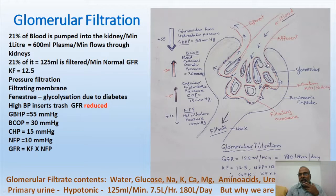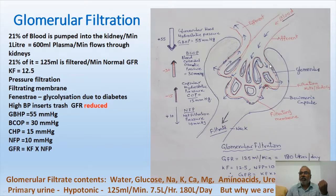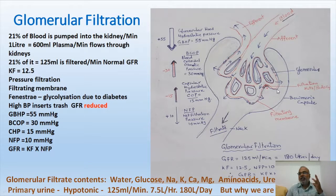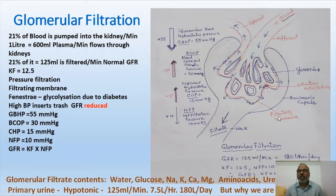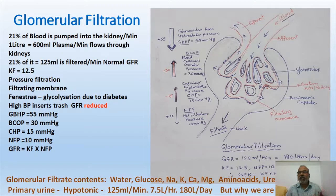Bowman's capsule also has a layer of squamous epithelium. Between the endothelium and the squamous epithelium of Bowman's capsule there is a basement membrane. These three structures together constitute the filtration membrane. The filtration membrane consists of: the endothelium of blood capillaries, the basement membrane, and the squamous epithelium of Bowman's capsule with podocytes.